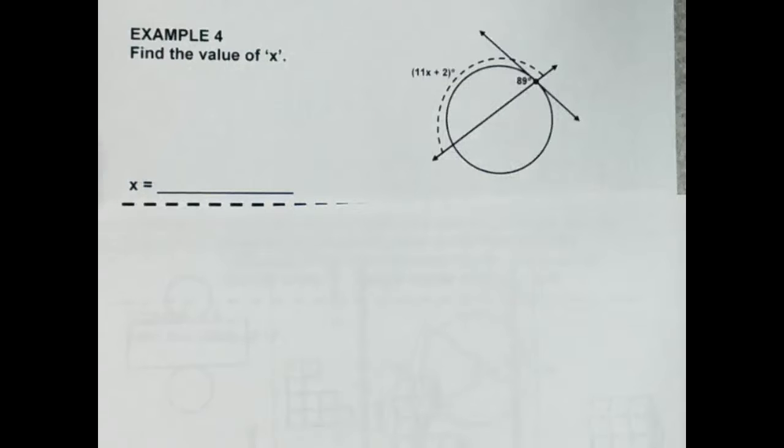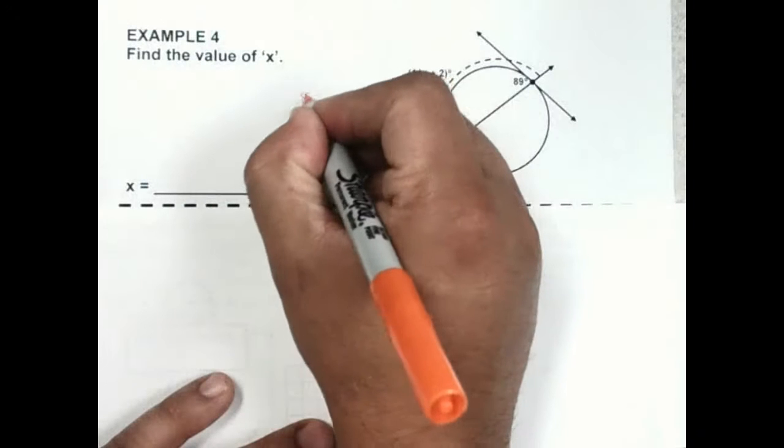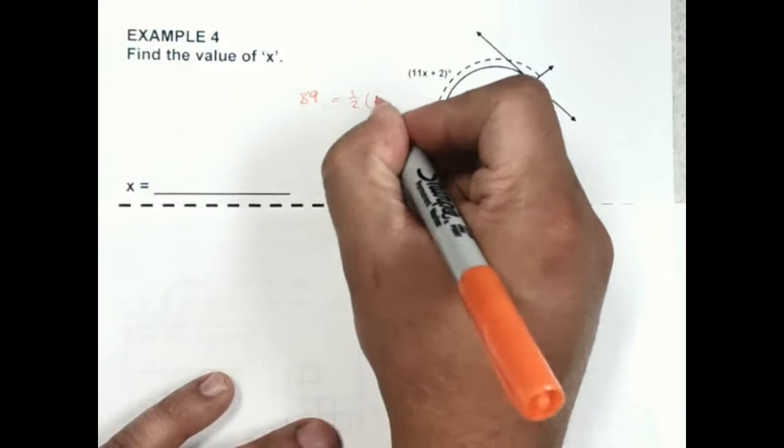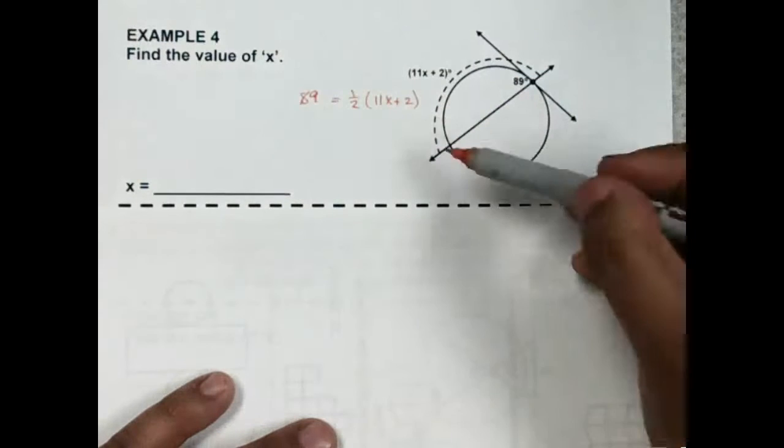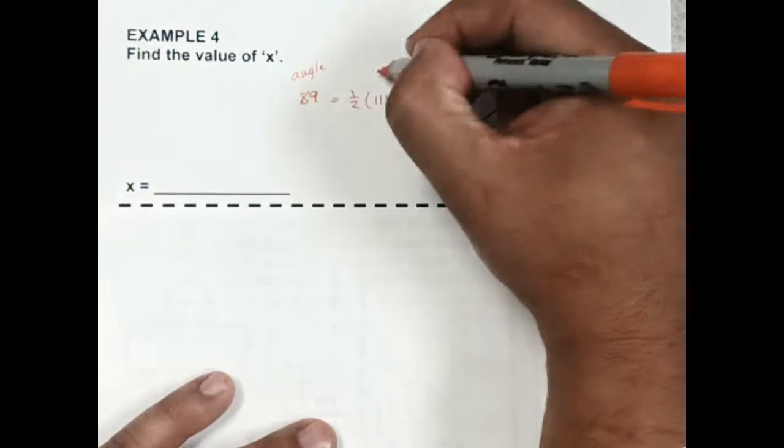All right, looking at number 4, I know the angle, 89, is equal to half the arc. Okay, so again, I'm going to write it this way: angle is half the arc.